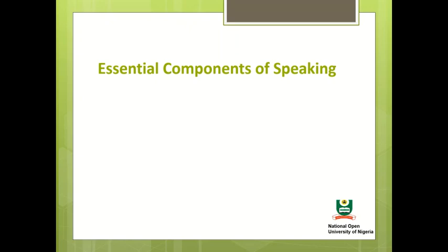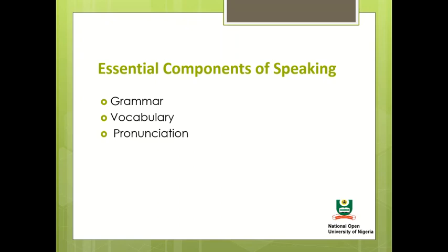Essential components of speaking. Grammar: this is the way sentences are constructed or the distinctive features of a language construction. Please note that the proper use of grammar is essential in speaking. Vocabulary: this is the appropriate diction used in communication and which has the power to greatly influence speaking skills. Pronunciation: correct pronunciation is of essence, as wrong pronunciations could be misleading.